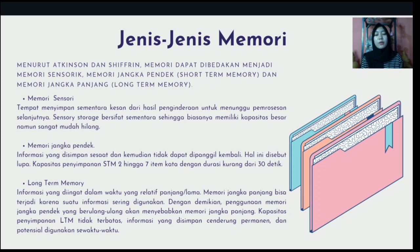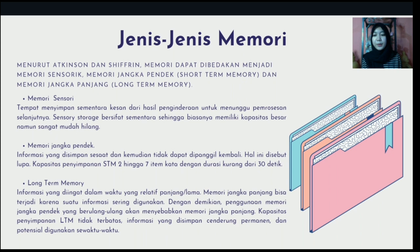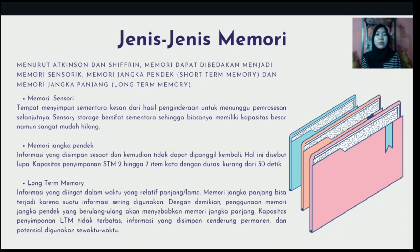Now, about the types of memory. According to Atkinson and Shiffrin, memory can be divided into sensory memory, short-term memory, and long-term memory. The first is sensory memory — a place to temporarily store the impression of the sensing result to await further processing. Sensory storage is temporary, so it usually has a large capacity but is very easy to lose.